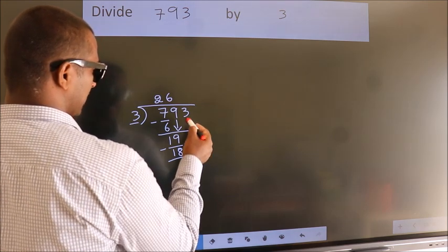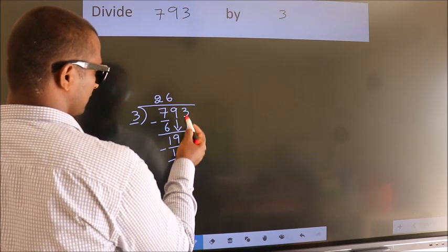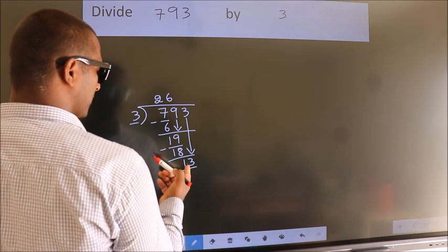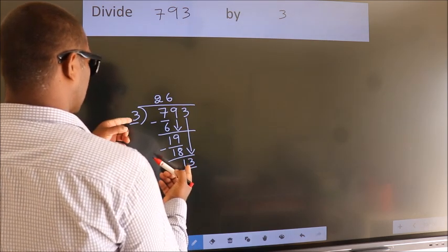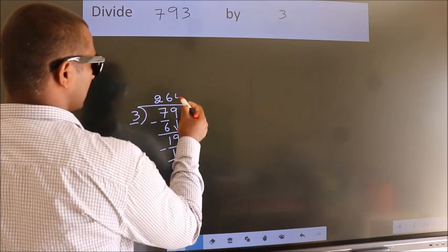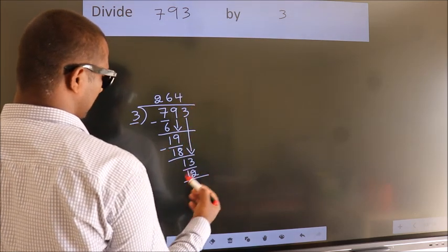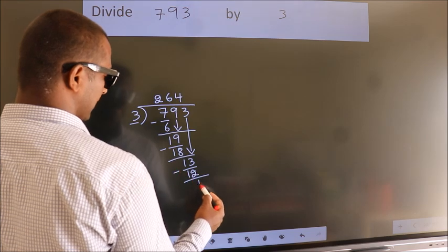After this, bring down the beside number. So, 3 down. So, 13. A number close to 13 in 3 table is 3 4s 12. Now, we subtract. We get 1.